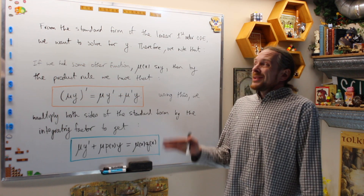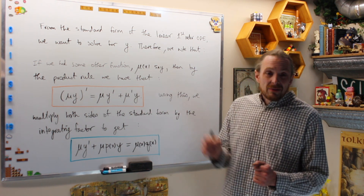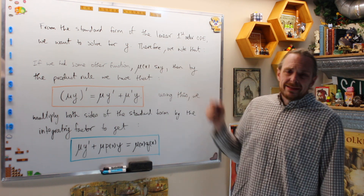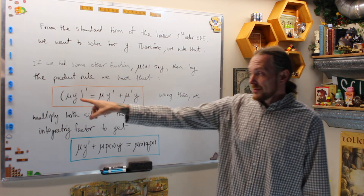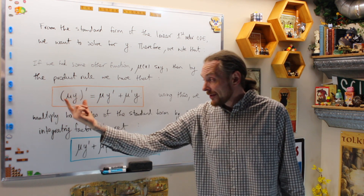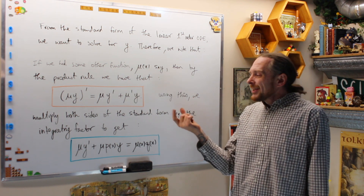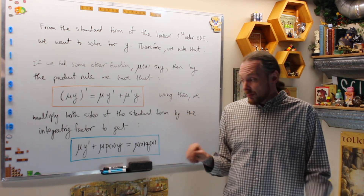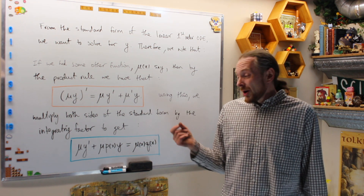From the standard form of a linear first order differential equation, we want to solve for y. We know that if we have some function mu of x and we have the product mu times y, then the derivative by the product rule tells us that the derivative of mu of x times y of x gives us mu y prime plus mu prime y. Cleverly noticing that, in our ODE, if we multiply both sides by this integrating factor mu of x...